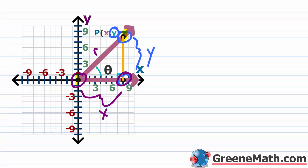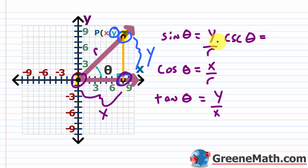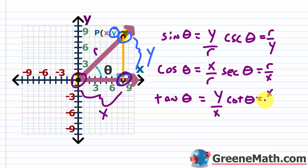We've already defined the six trigonometric functions using these letters. Sine of theta is y over r, cosine of theta is x over r, and tangent of theta is y over x. Using the reciprocal identities we get the remaining three: cosecant of theta is r over y (y can't be 0), secant of theta is r over x, and cotangent of theta is x over y.